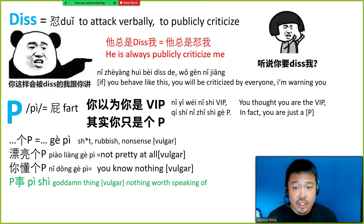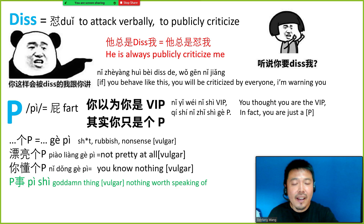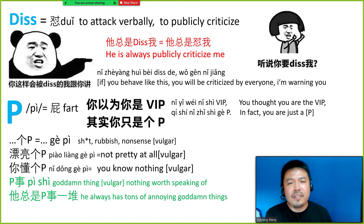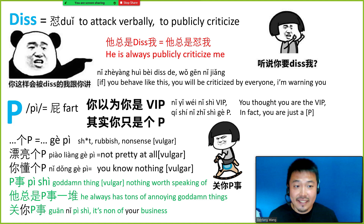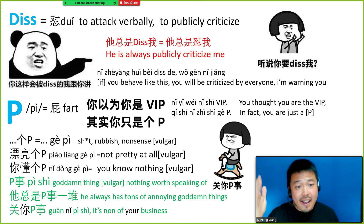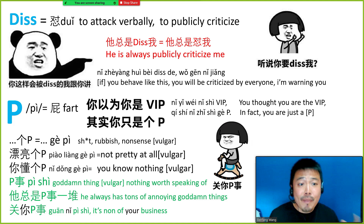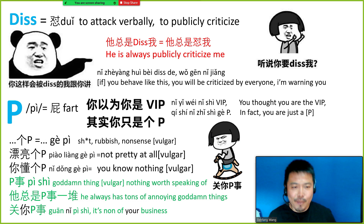Another one is 屁事, meaning a goddamn thing — silly things not worth speaking of. For example, 他总是屁事一堆 — he always has tons of annoying goddamn things. Or another famous saying is 关你屁事, which means it's none of your business. If someone asks you a lot of private questions like 你赚多少钱 or 你结婚了吗, you can say 关你屁事 — it's none of your business. It's a little blunt, so it depends on the relationship between speakers.